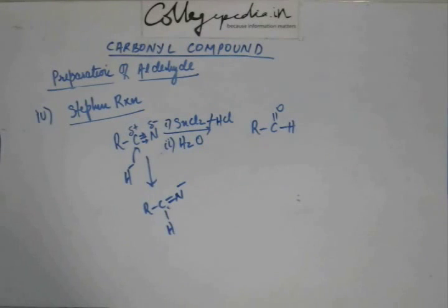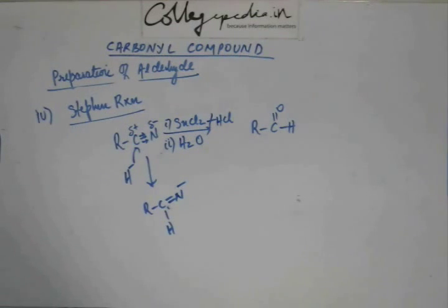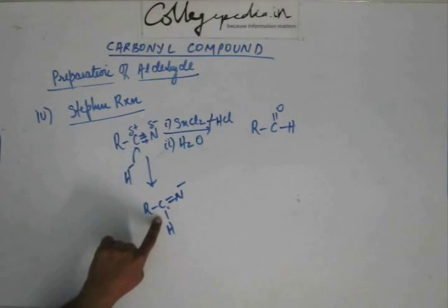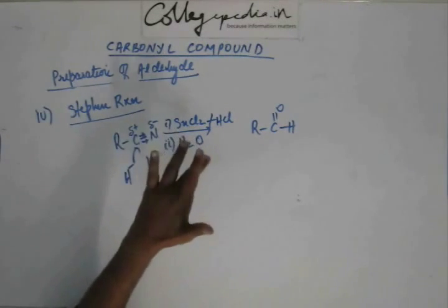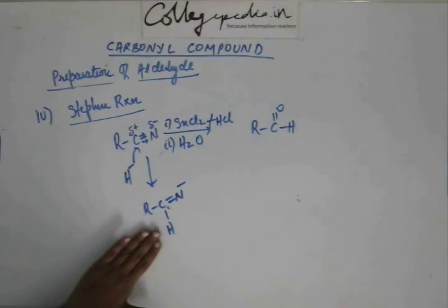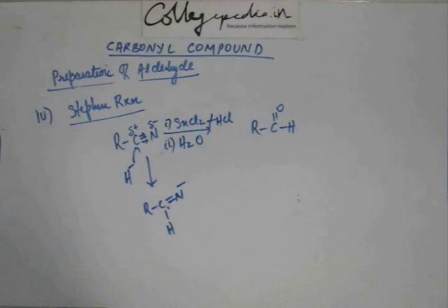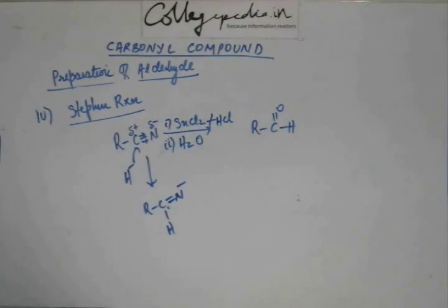The second pi bond is not going to be reduced. Why? Because SNCl2 is a mild reducing agent — that's why. SNCl2 is not a great reducing agent, so it's not going to reduce the second pi bond of cyanide. That is the bottom line. So the second pi bond is going to stay. After adding SNCl2 plus HCl, this is what you are going to get — reaction will stop at this stage. That's why we concluded that SNCl2 is a mild reducing agent; one pi bond is reduced by this hydride, the other pi bond will not be reduced.